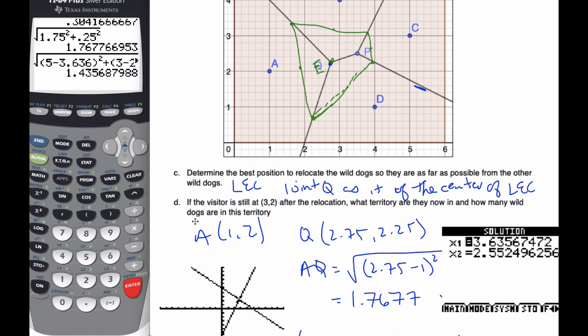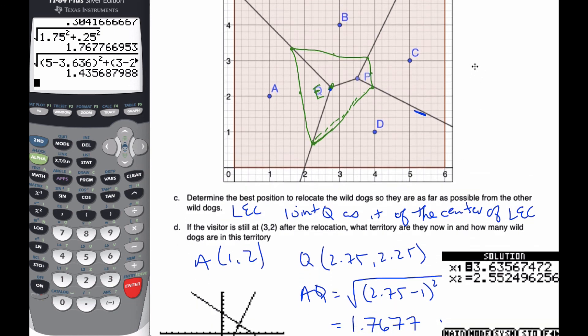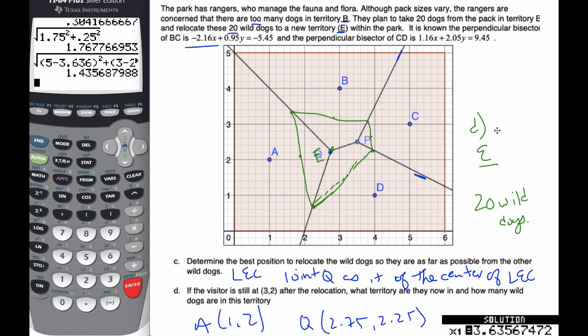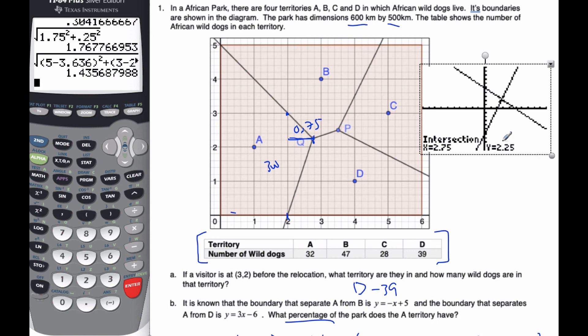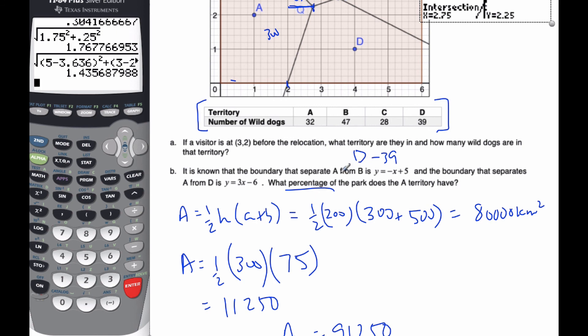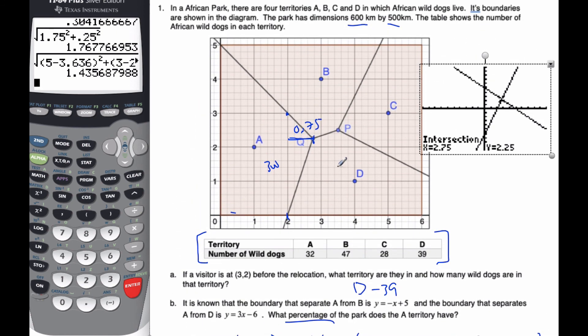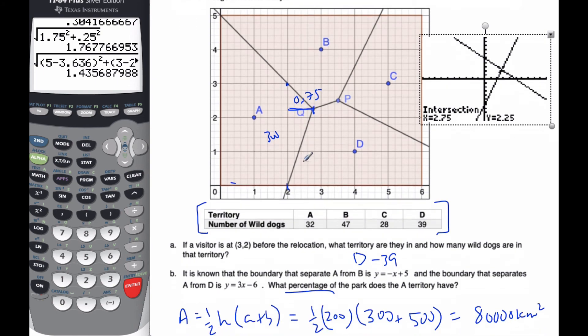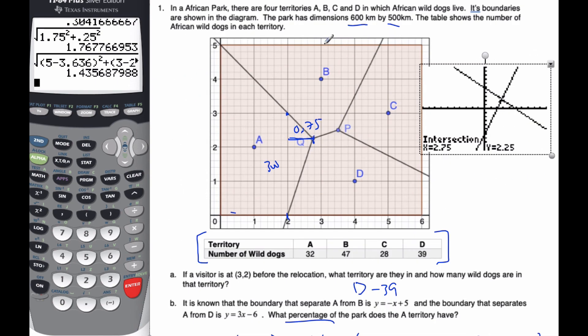Finally, if the visitor is still at (3,2) after relocation, what territory are they in? To answer question D, they are in territory E now, and there are 20 wild dogs because that is how many were put into the new territory. In solving these problems, the mathematics is really just geometry and linear algebra, finding points of intersection, but the details are quite specific. You've got to keep track of the decimal places, and there's a lot to the whole process putting it all together. But I think with practice and with care, you will be successful.